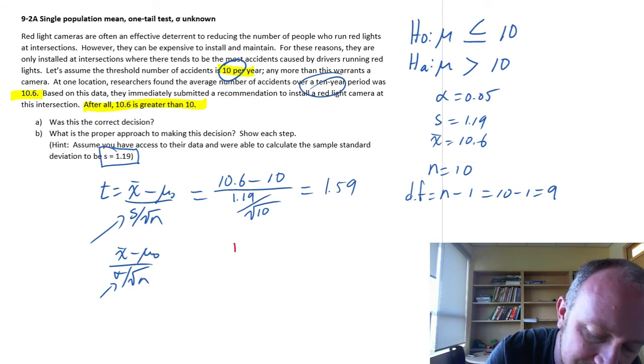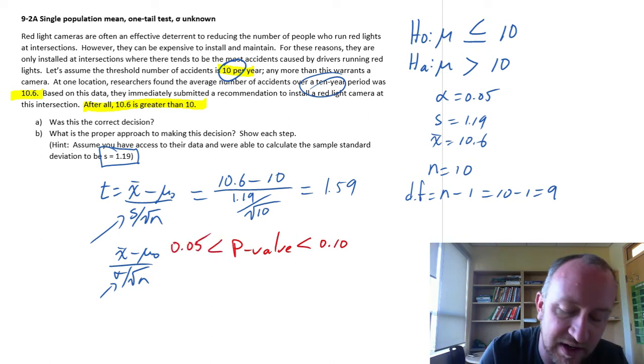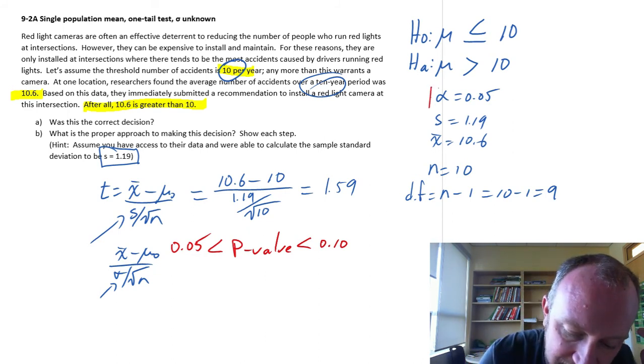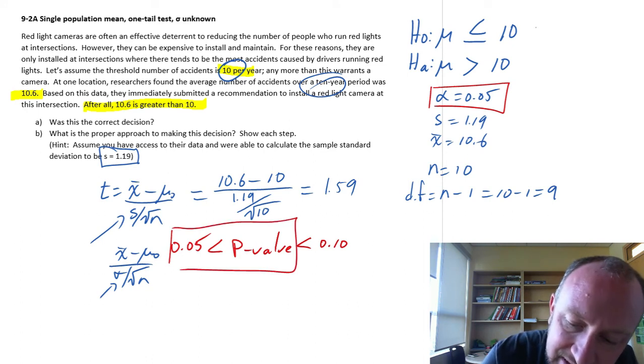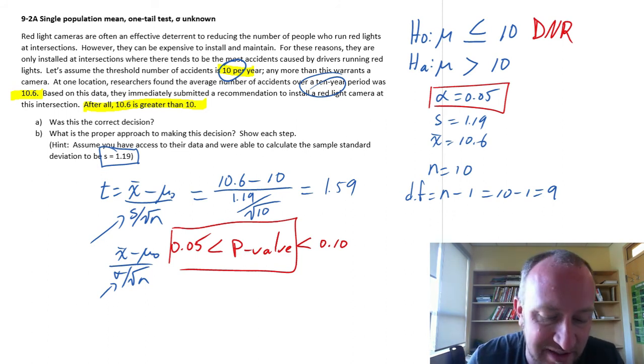So coming back to our exercise, I have a p-value that is less than 0.1 greater than 0.05. So can we draw our conclusion? Okay, it is greater than 0.05. So this does give us sufficient evidence to not reject the null hypothesis.